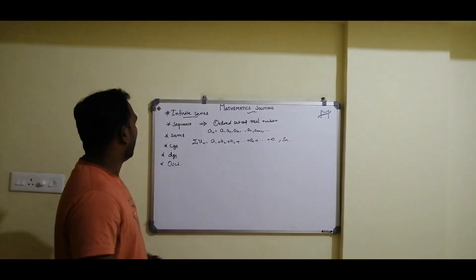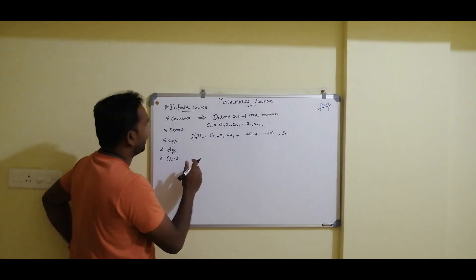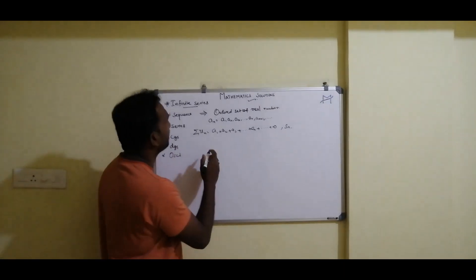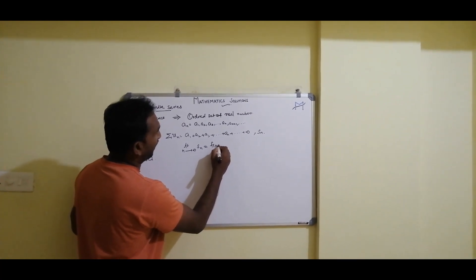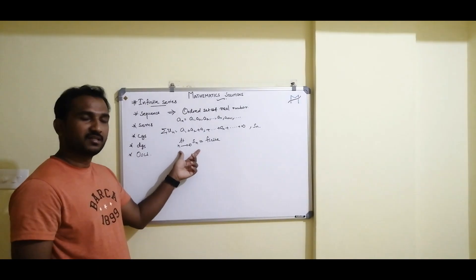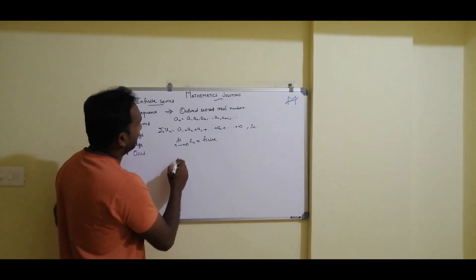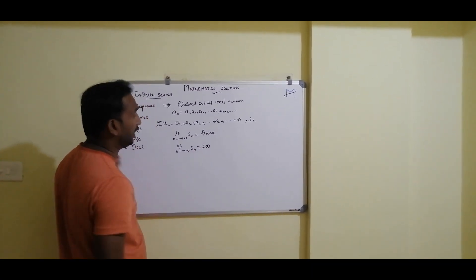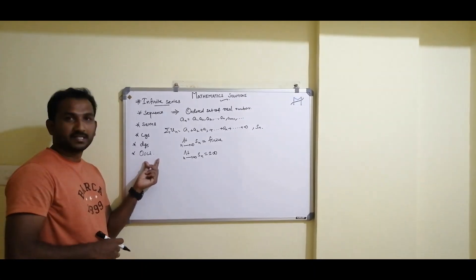What is meant by convergence? If the limit of Sn as n tends to infinity equals a finite value, that is called a convergent series. If the limit tends to plus or minus infinity, we call it a divergent series — mathematically, limit as n→∞ of Sn = ±∞. If the limit does not reach any finite value, we call it an oscillatory series.